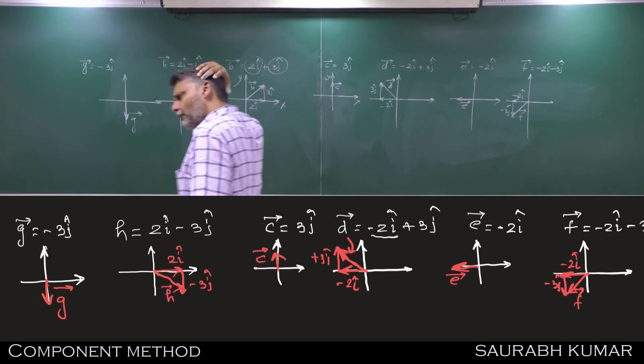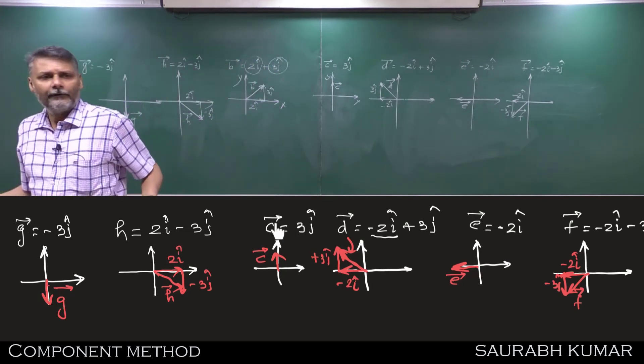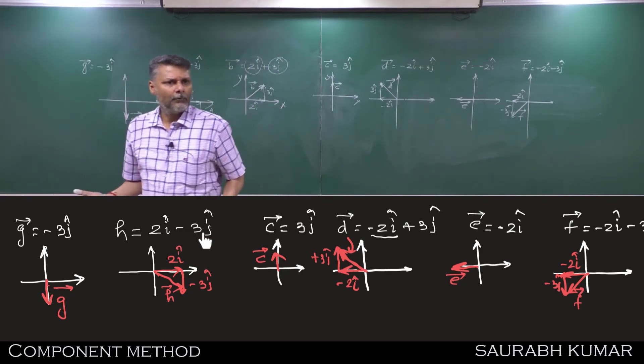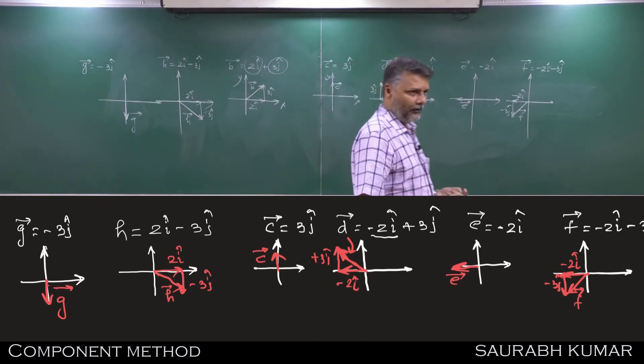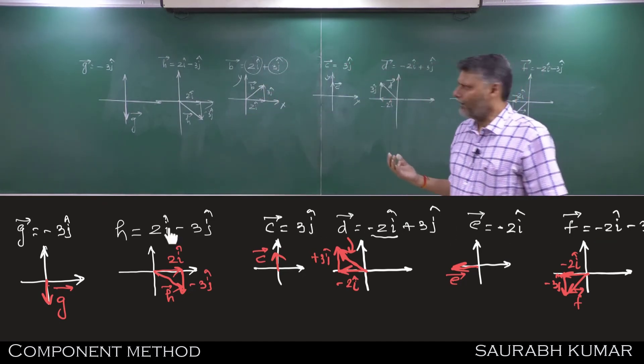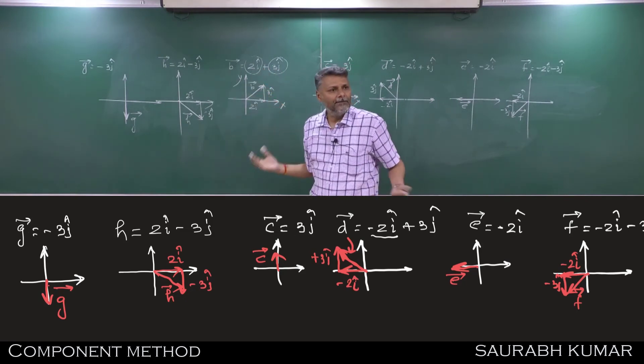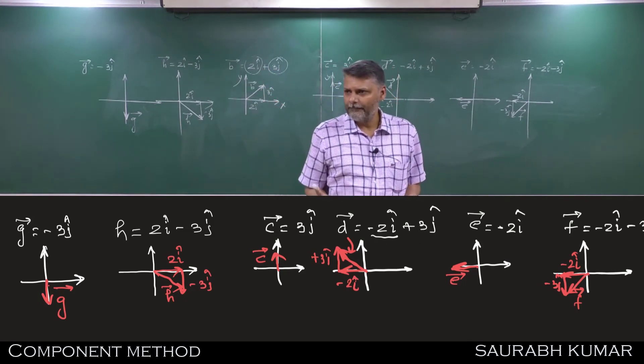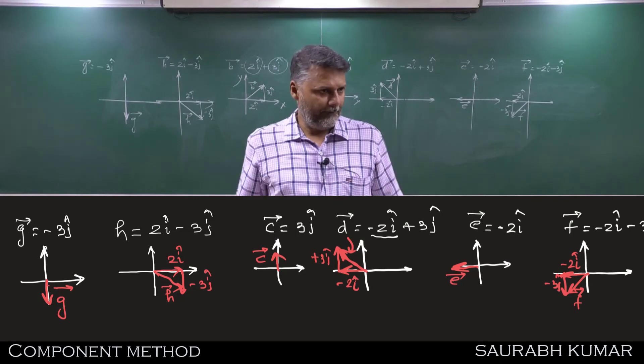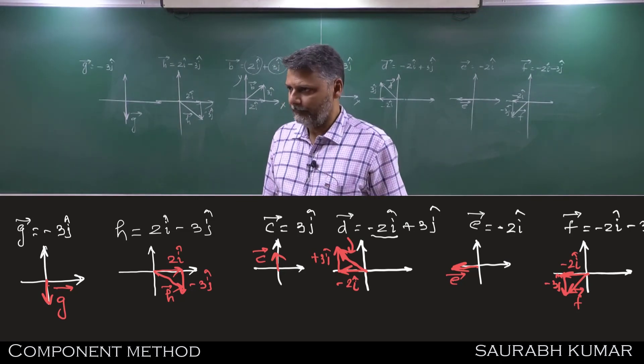You can easily draw that vector. If vector is in what form? Component form. Vector is in component form. You can easily draw it or by just looking at x and y component, you can easily decide what is quadrant of vector or is vector along any axis. Clear?